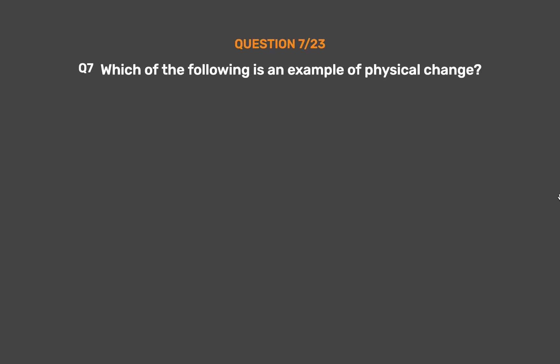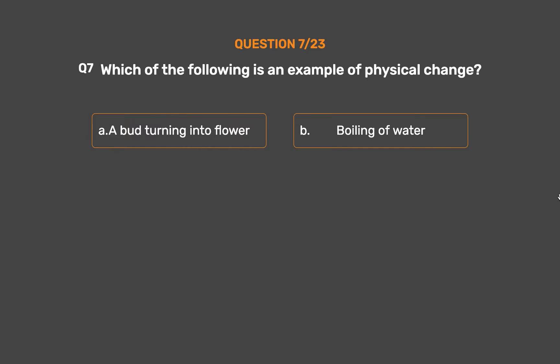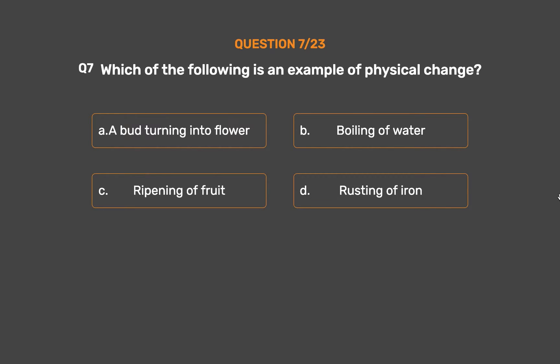Question number 7. Which of the following is an example of physical change? Option A: A bud turning into a flower. Option B: Boiling of water. Option C: Ripening of fruit. Option D: Rusting of iron.